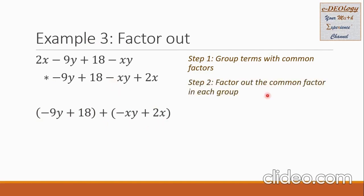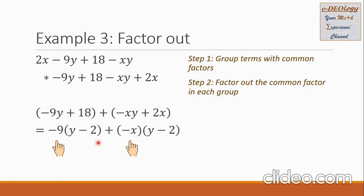Step 2: factor out the common factor. In the first group, the common factor is 9, but I want the variable y to be positive, so I pull out negative 9. The remaining terms inside are y minus 2. Checking: negative 9 times y gives negative 9y, and negative 9 times negative 2 equals positive 18. So these factors are correct for the first group.